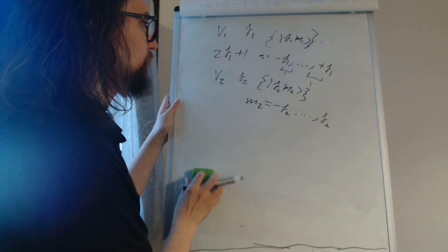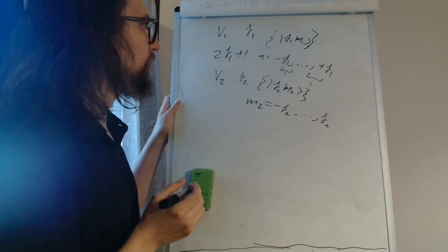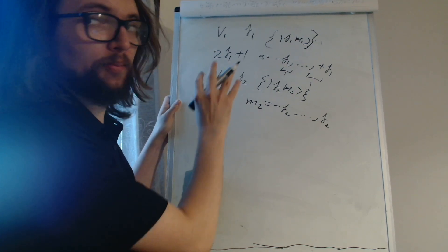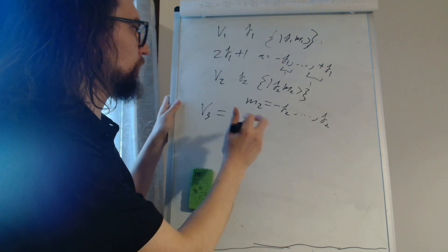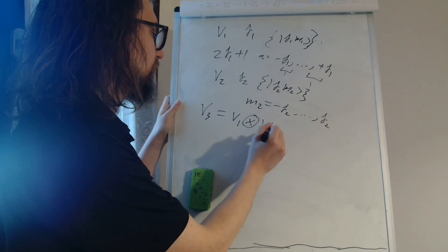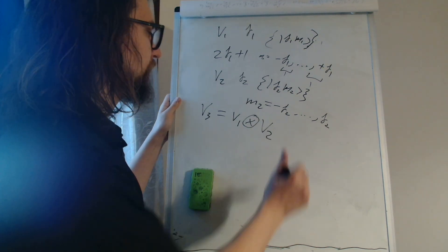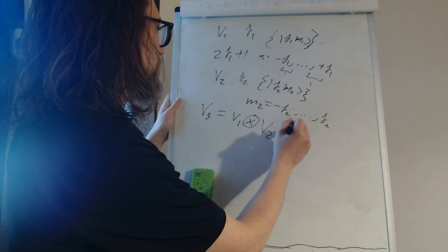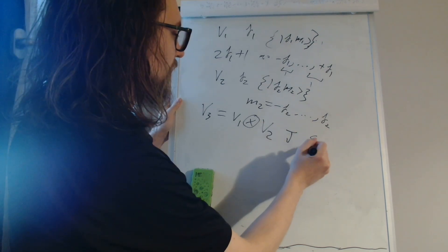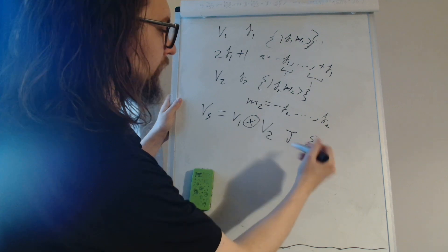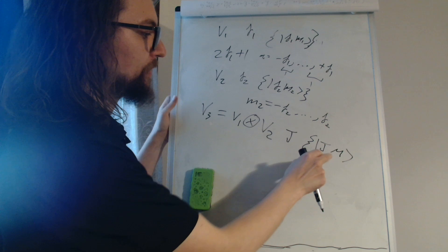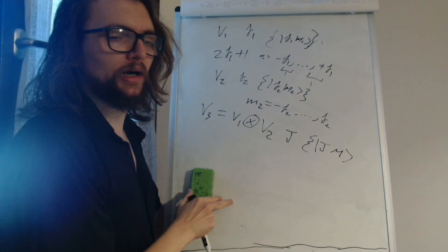Now we want to compute the angular momentum of a system V3, which is the coupling of these two systems, given by the tensor product V1 times V2. It will have a momentum, let's call it J, and it will have basis states J, M.